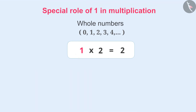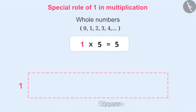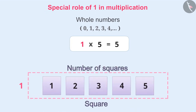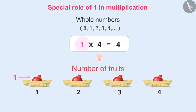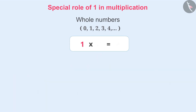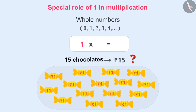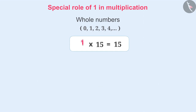We can see something similar in multiplication too. If any whole number is multiplied by 1 — for example, if there are 5 squares in a row, the total number of squares is 1 multiplied by 5, which is 5. There are 4 baskets; if one fruit is kept in each basket, the number of fruits will be 1 multiplied by 4, which is 4. Similarly, if the cost of each chocolate is rupee 1, then the cost of 15 chocolates will be 15 rupees, because 1 multiplied by 15 is equal to 15. Since any number multiplied by 1 gives the same whole number, 1 is called an identity for multiplication of whole numbers.